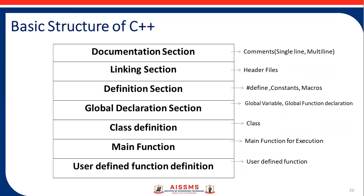The second is the linking section, where we add header files like #include <stdio.h> or #include <conio.h>. The third is the definition section, where we define constants using #define, for example, #define PI 3.14.